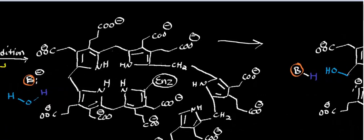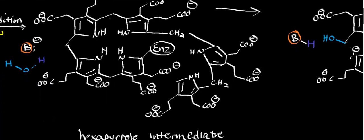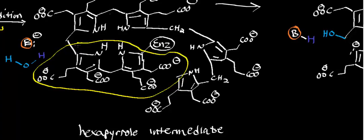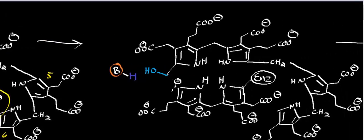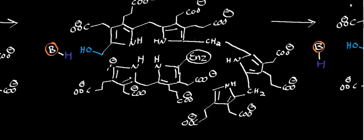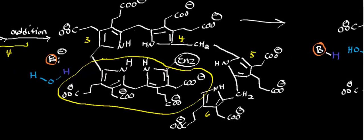Finally, what we get is the hexapyrrole intermediate. It's called hexapyrrole because we have the dipyrrole coenzyme plus a third, fourth, fifth, and sixth pyrrole — six pyrroles total. Therefore it's called the hexapyrrole intermediate of porphobilinogen deaminase's mechanism. The final step of this mechanism is to hydrolyze off the dipyrrole coenzyme.